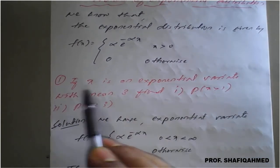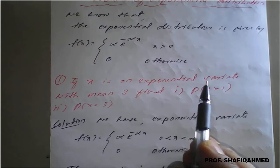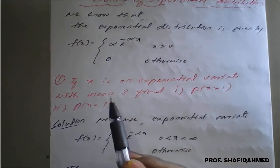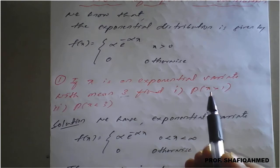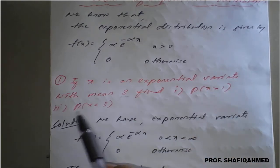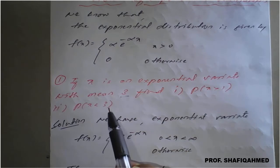The first example is: if x is an exponential variate with mean 3, find P(x > 1) and second one, P(x < 3).